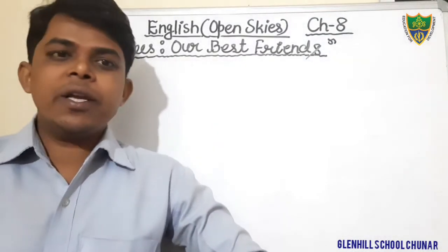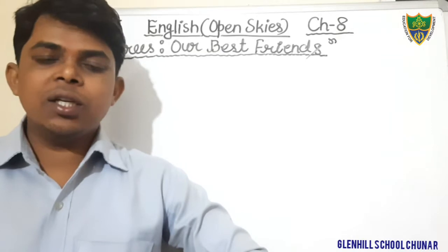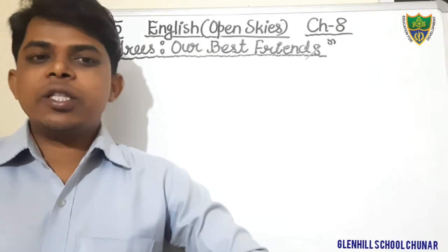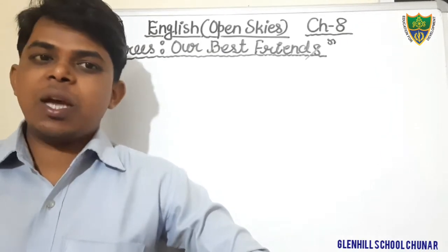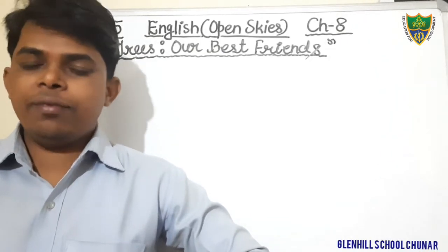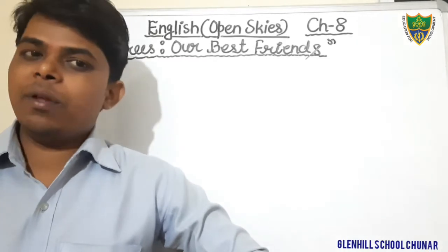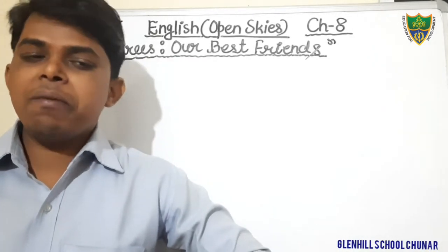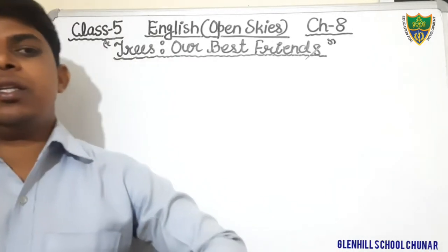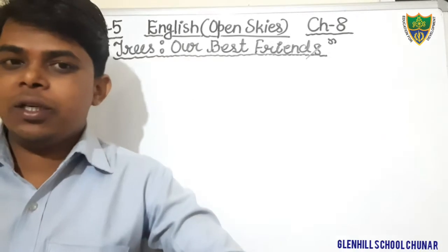Hello students, good morning. I am Prem Gupta, your English teacher. In the previous classes we were discussing Chapter 8 of English Reader. The name of the book is Open Sky. The name of the chapter is Trees Our Best Friend.